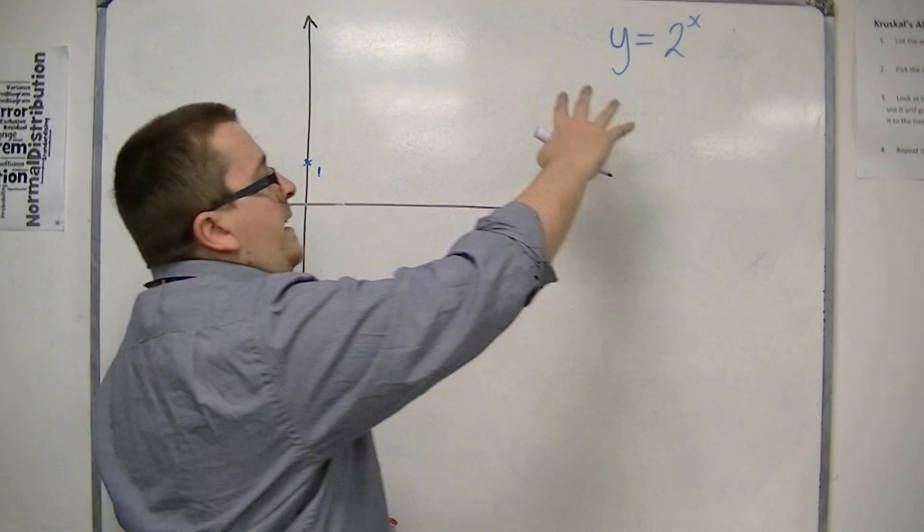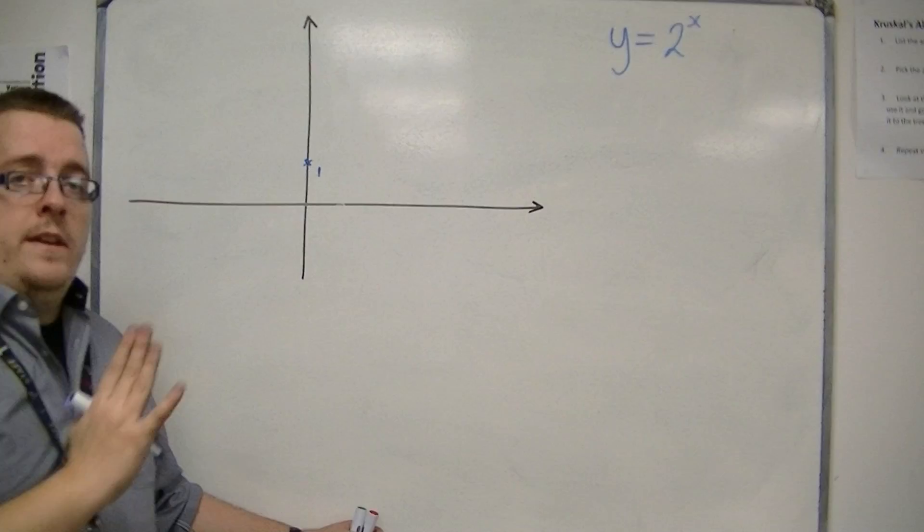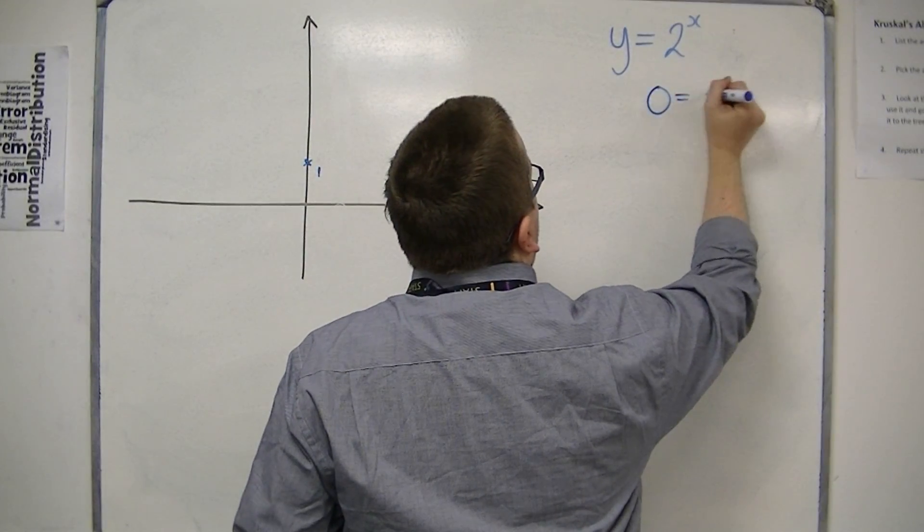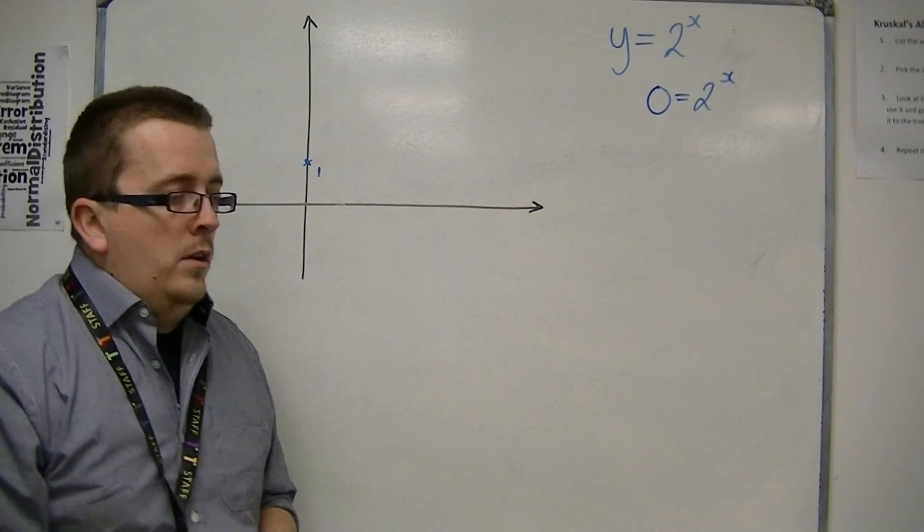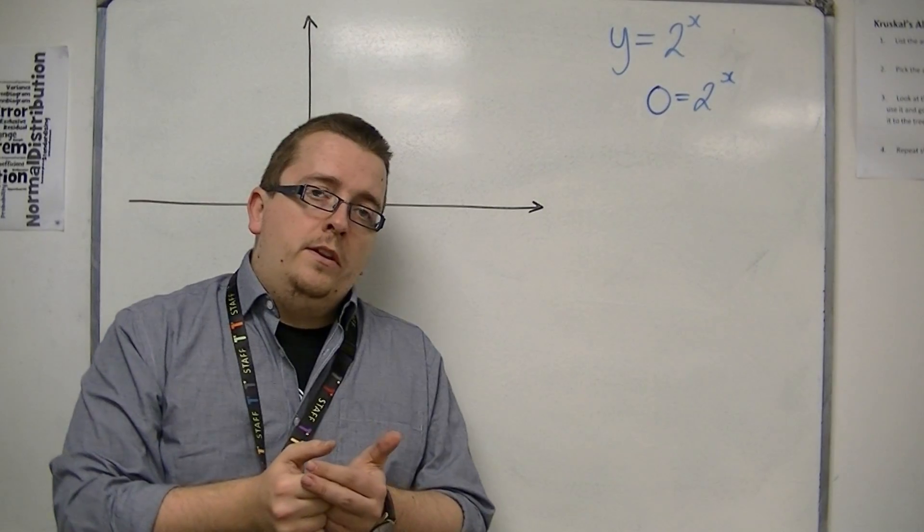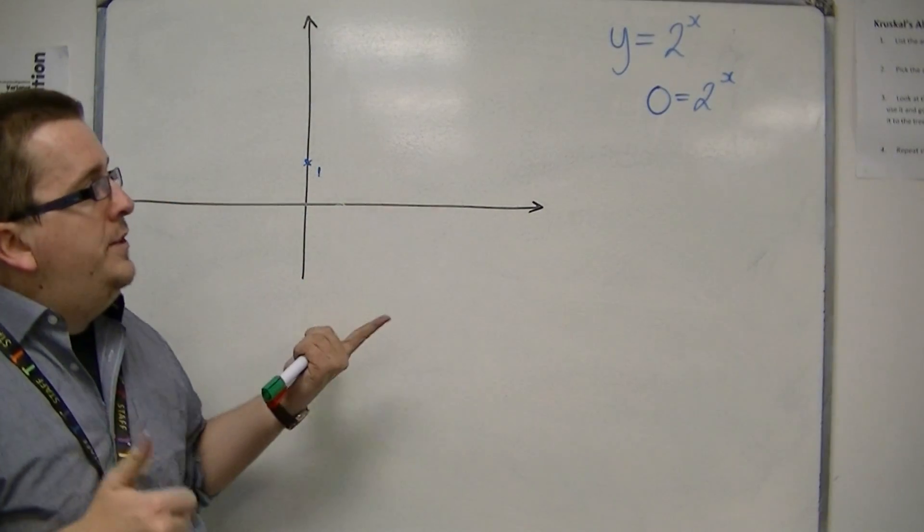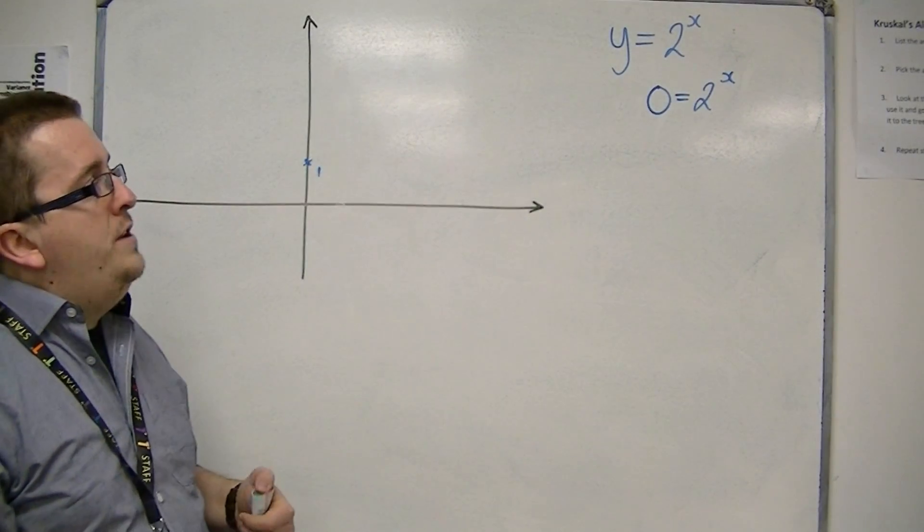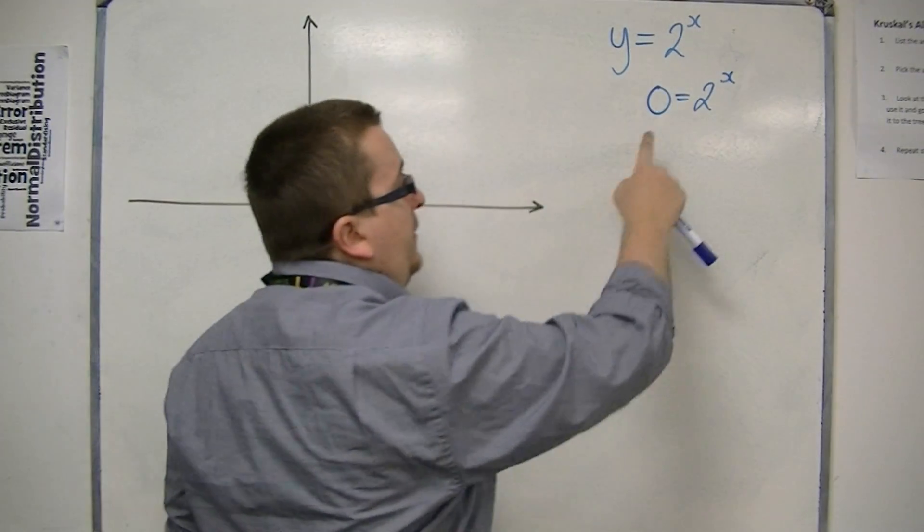Now if you're looking at where it crosses the x axis, that's when y is 0. So if we put y is 0 for the moment, then try all you might, try different values of x, be it 100, minus 100, 0, 0.1. You're never going to find a value that will get 2 to the x to be 0.